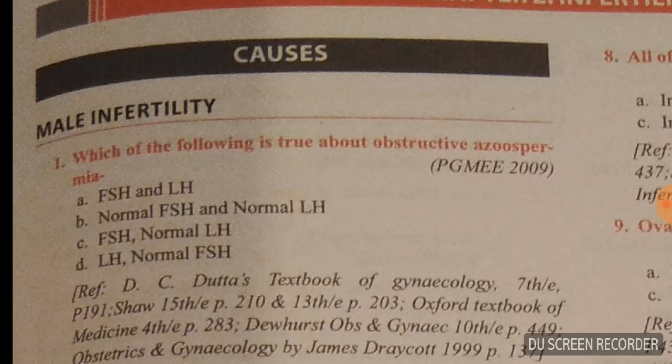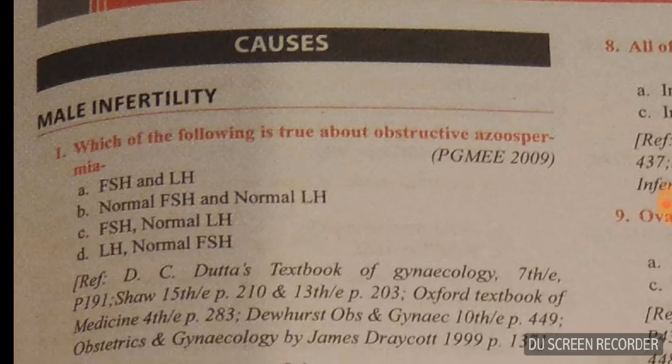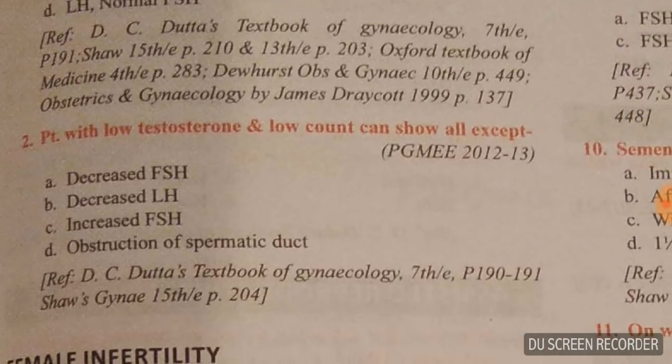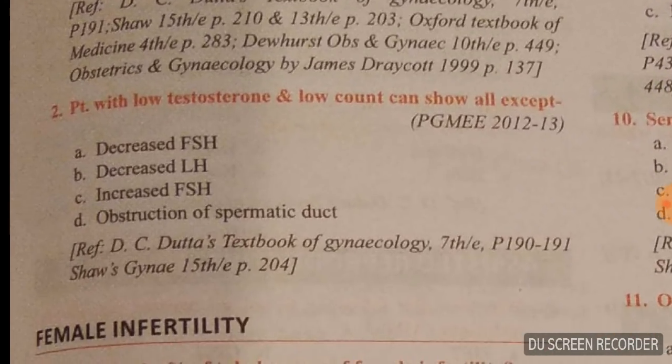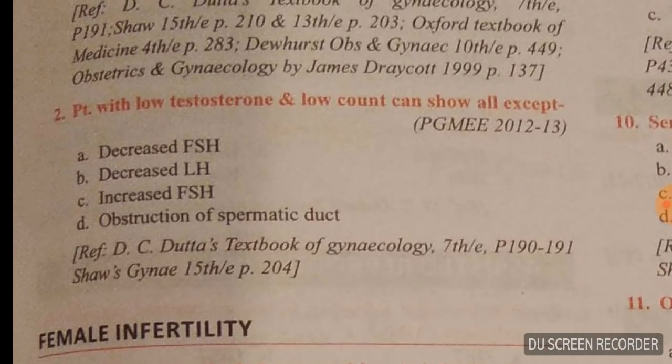In obstructive azoospermia, the levels of FSH and LH are normal because there is an obstruction but no disturbance with hormone levels. Question number two: a patient with low testosterone and low count — what hormonal disturbance will be seen?